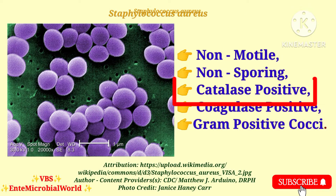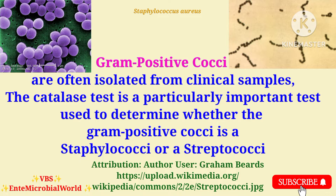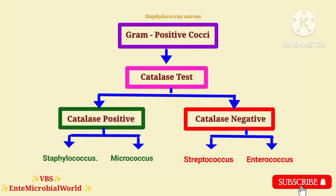Next one is catalase positive. Gram positive cocci are often isolated from clinical samples. The catalase test is a particularly important test used to determine whether the gram positive cocci is a Staphylococci or a Streptococci. Staphylococcus and Micrococcus species are catalase positive, while Streptococcus and Enterococcus species are catalase negative.